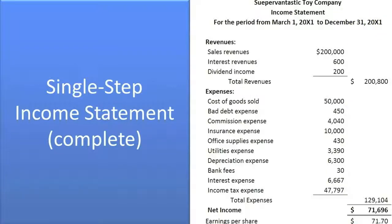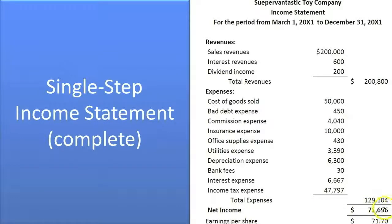This is a single-step income statement — we took all the revenues and added them up to get total revenues, then all the expenses and added them up to get total expenses. Revenues minus expenses gave us net income of $71,696. To get the earnings per share, we took that net income and divided by the number of shares issued and outstanding — 1,000 shares — which means each share effectively earned $71.70.